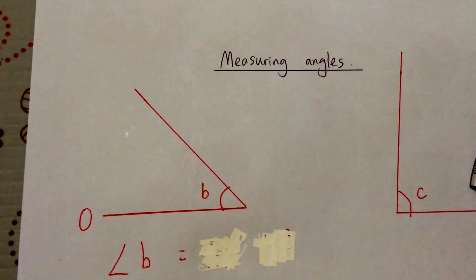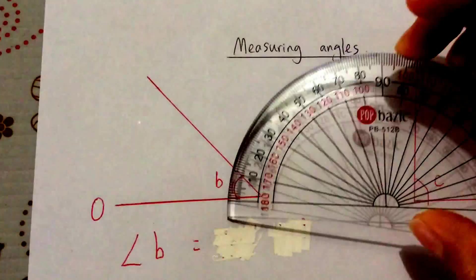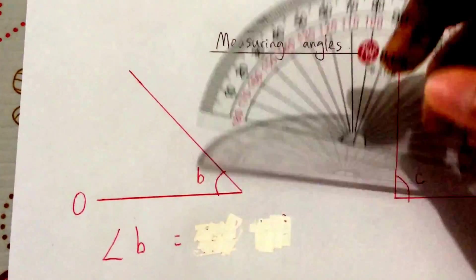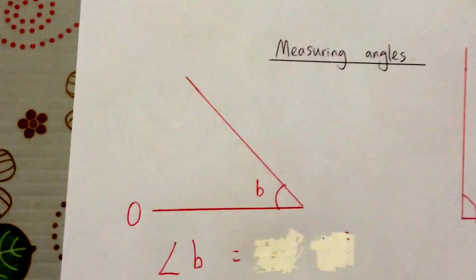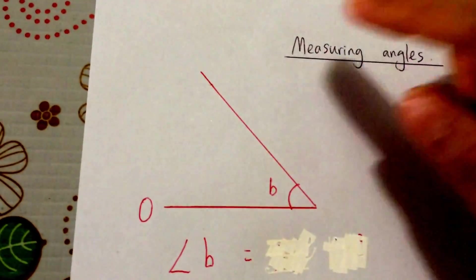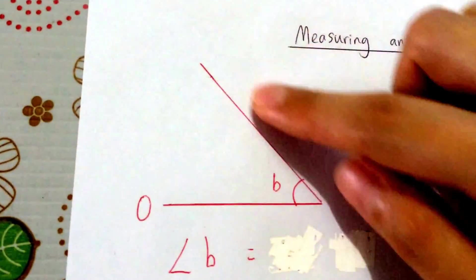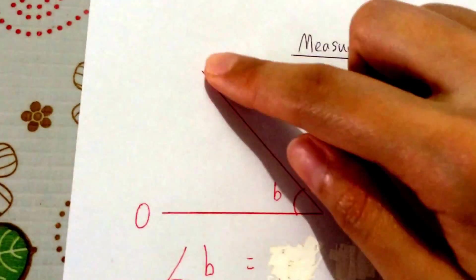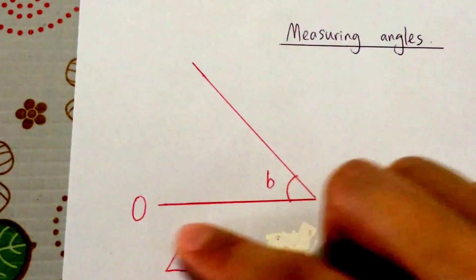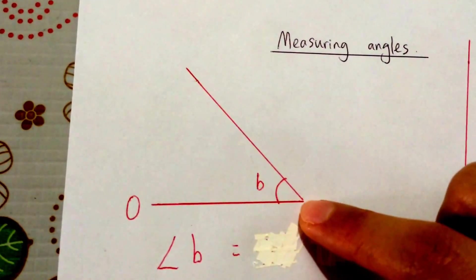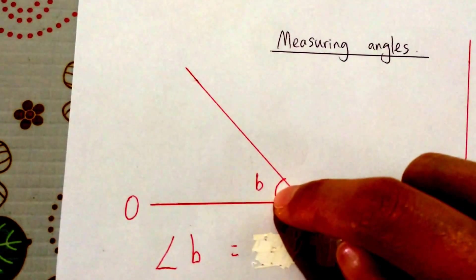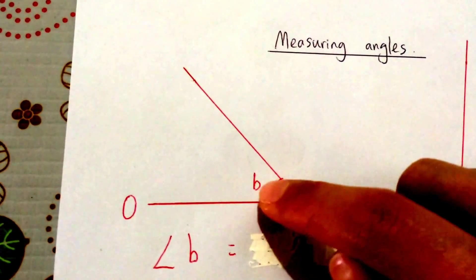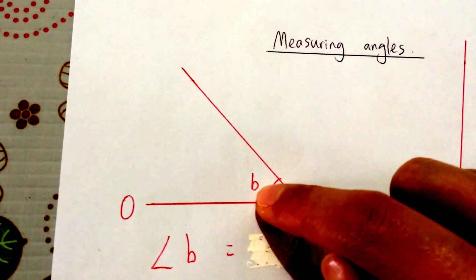Next we're going to learn how to use your protractor to measure angles. For example, you have this angle here — two lines meeting at a point, and you have an angle in the center. This is angle B.